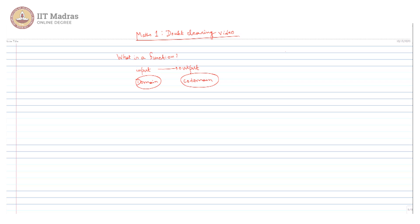Before functions there is something called Cartesian product. Suppose we have two sets A and B, then we denote the Cartesian product by A cross B. These are basically ordered pairs where the first element a is from A and b is from B. Any subset of this Cartesian product — not necessarily a proper subset — is known as a relation, or more specifically, a binary relation.